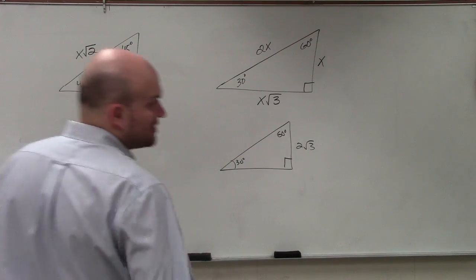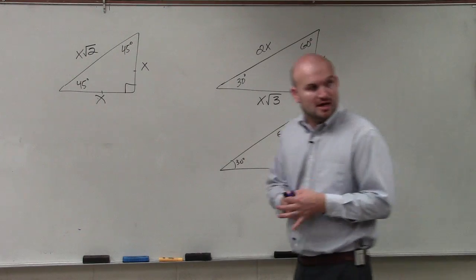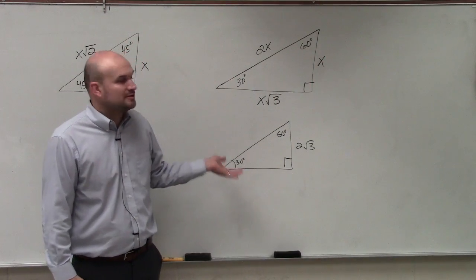So in this one, it's a 30-60-90 triangle. The relationships of 30-60-90 triangles are going to be totally different, Zach, than what we did with 45-45-90 triangles.